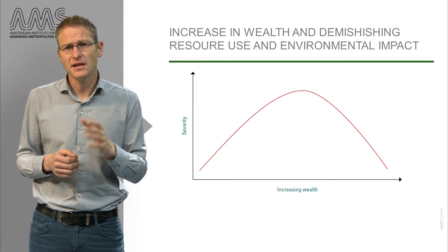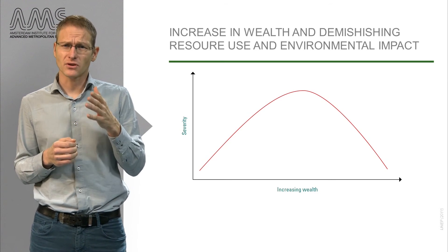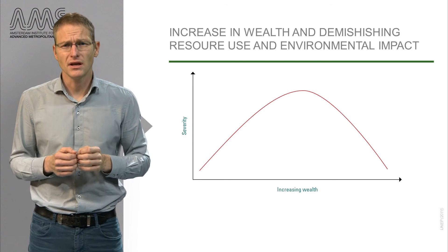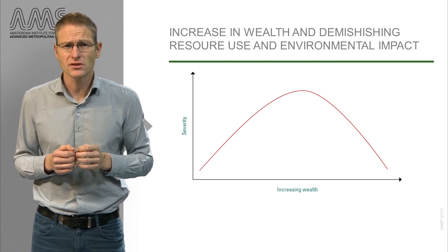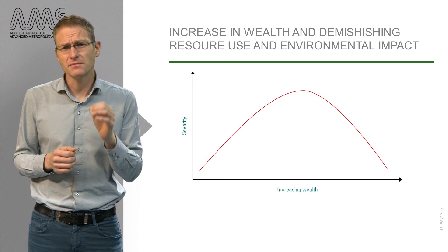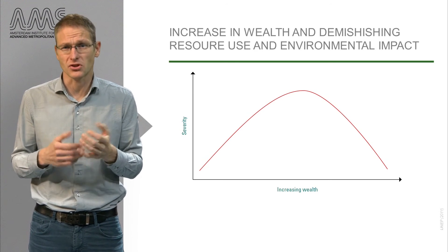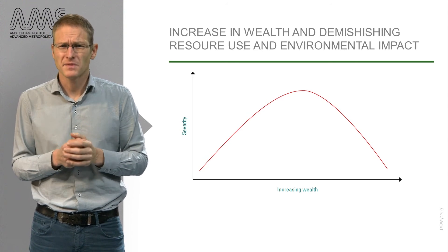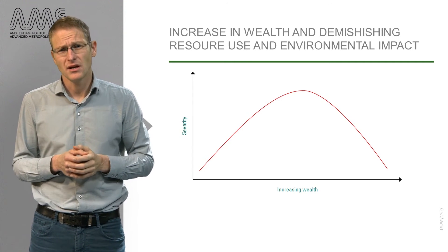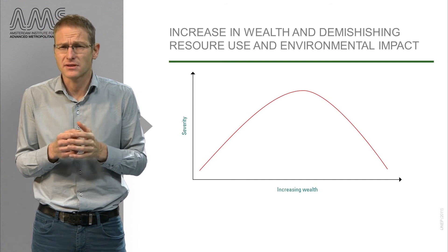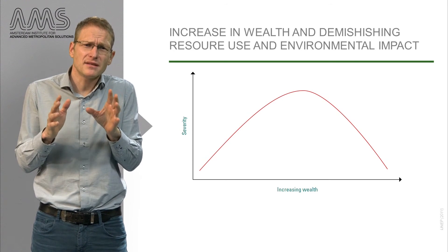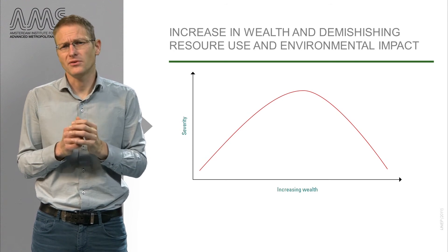As can be seen here, it shows that with increasing wealth there will be a turning point in natural resource use and environmental impact. While this curve seems to hold true for some resources, such as water, this relationship is not evident for other resources, such as the decline of fisheries, for instance. Though this is still subject to some debate in the scientific community.